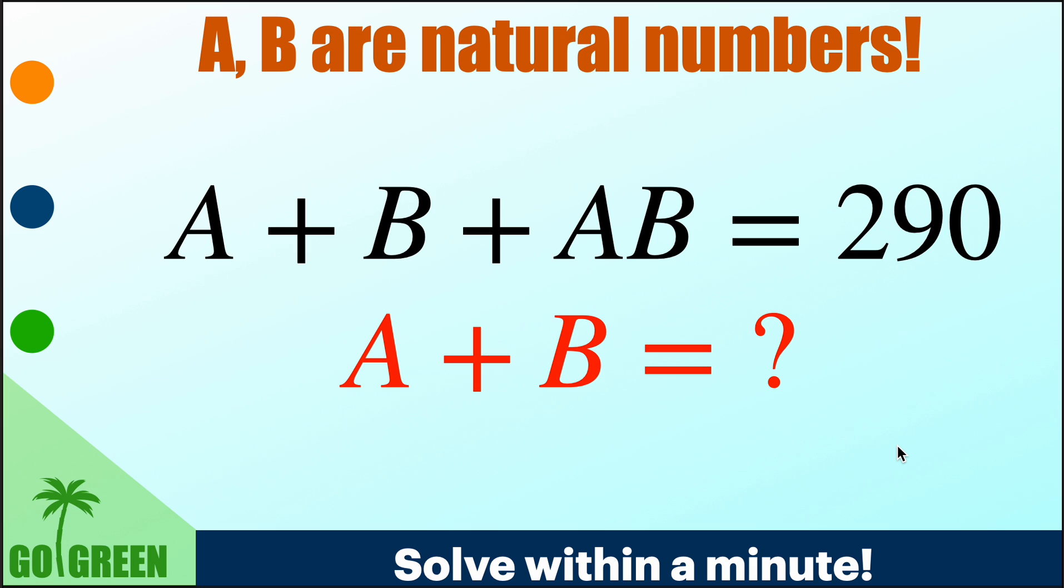So the problem is given here, A plus B plus AB is an identity which is equal to 290. Then what is the value of A plus B?